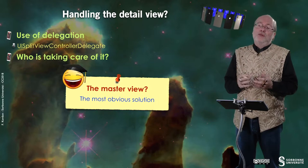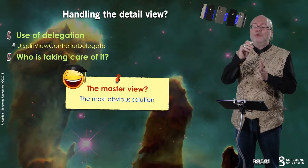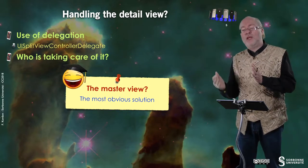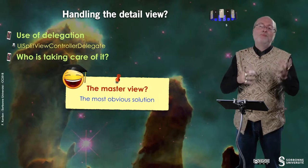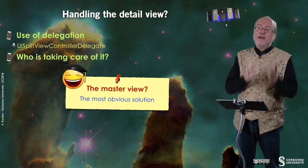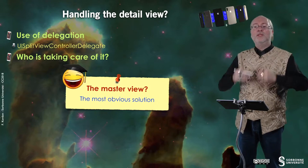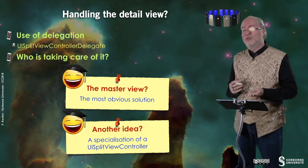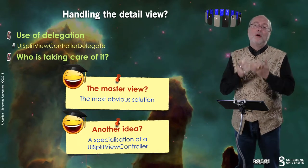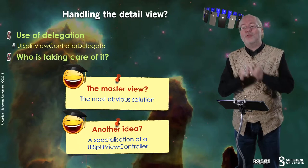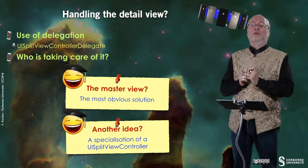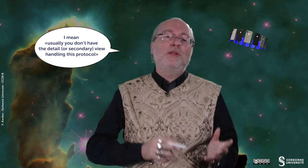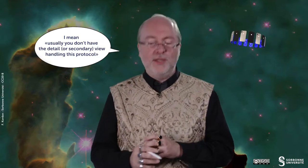The master view is called the primary view, because what you do in this view may have an impact on the other view, called the detail view or secondary view. The master view has a role in handling this protocol, but you could also create a view controller that is the root view of the application, that extends UISplitViewController and also handles the protocol. Usually though, you have the master view handling this protocol.